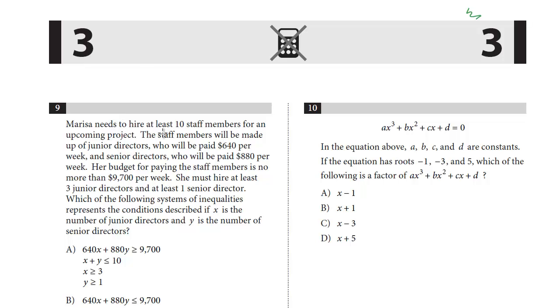Question 9: Marissa needs to hire at least 10 staff members for an upcoming project. The staff members will be made up of junior directors who will be paid $640 a week and senior directors who will be paid $880 per week. Her budget for paying the staff members is no more than $9,700 per week. She must hire at least three junior directors and at least one senior director. Which of the following systems of inequalities represents the condition described if X is the number of junior directors and Y is the number of senior directors?